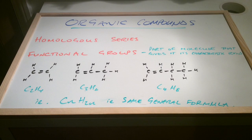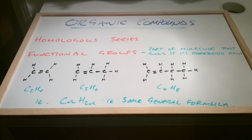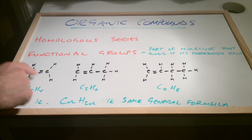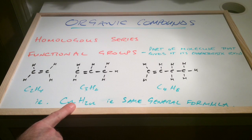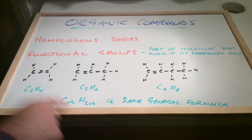I used the term 'organic family' at the start of the video, but there's a proper term for that — we can't use 'family' in an A-level exam. We call such groups of organic compounds a homologous series. What makes a homologous series? The compounds must contain the same functional group — in the case of the alkenes it's the carbon-carbon double bond — and they also have the same general formula.